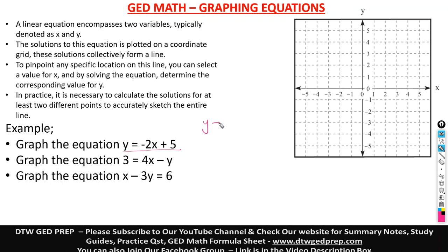This is already arranged for us. We need two locations — two points. The first thing, always easy to do, is just make X equal to zero. I always like to start with zero — just make things easy for yourself. Let X be zero.